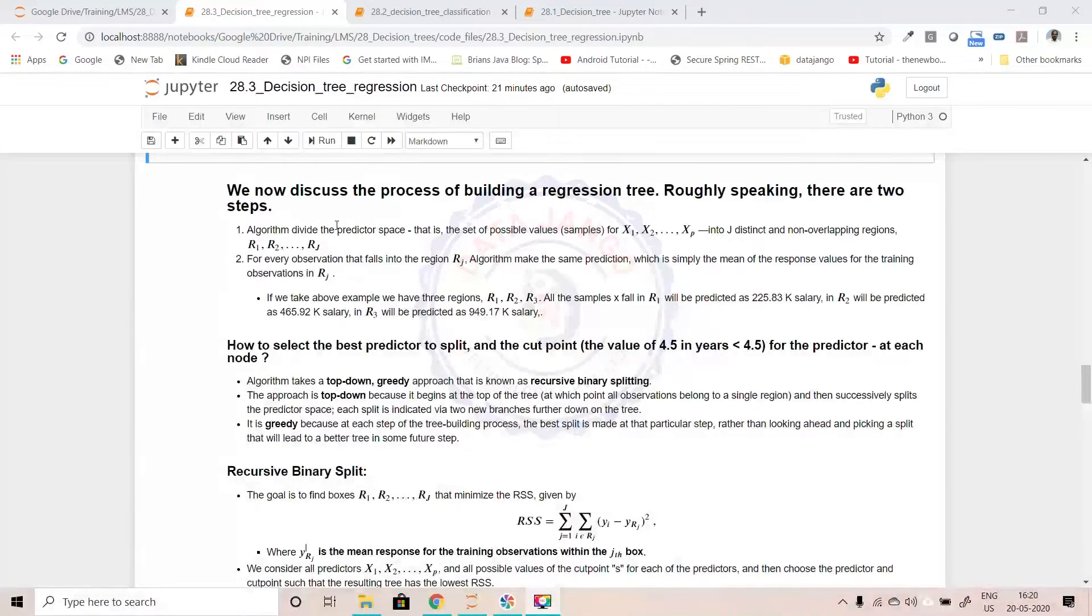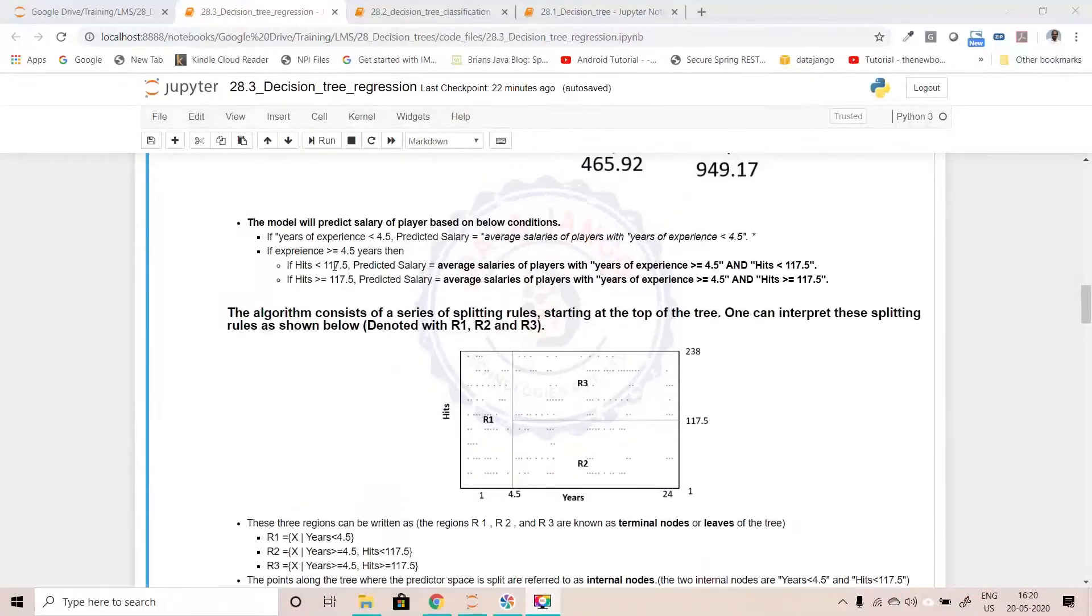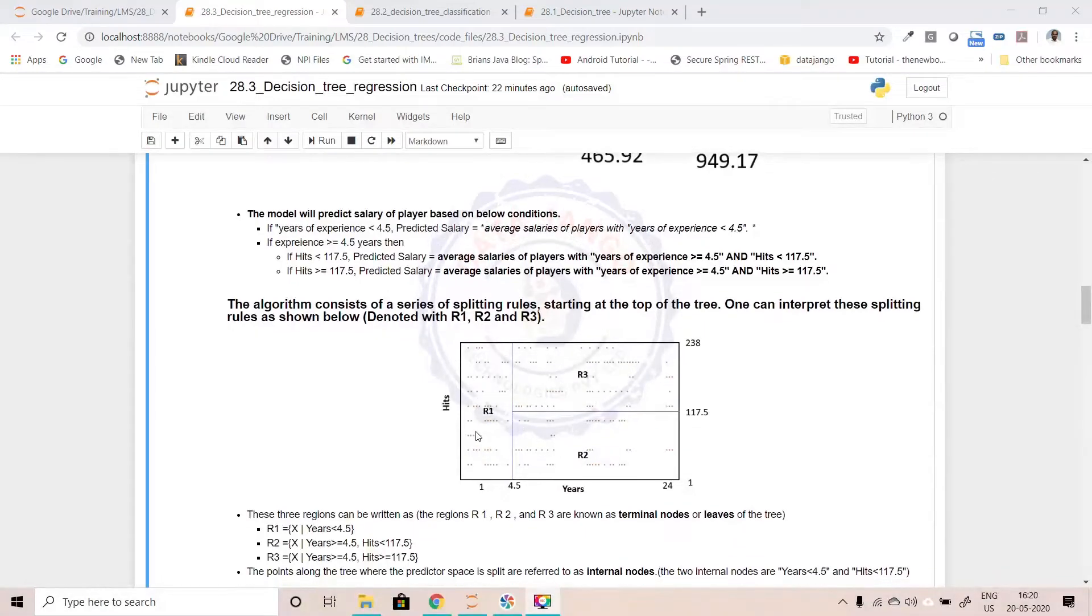The algorithm divides the predictor space - predictor space is x1, x2 and so on xn or xp - it divides the rows into different regions. If you look at this, the dots are nothing but the data points there. If you have n number of features, each data point will have n number of values. It is a vector.